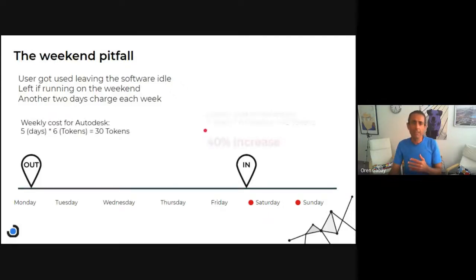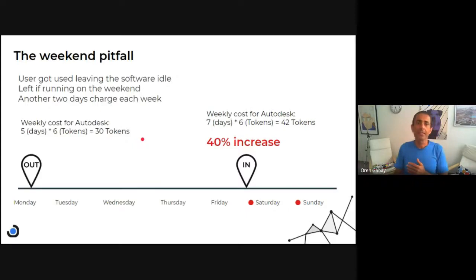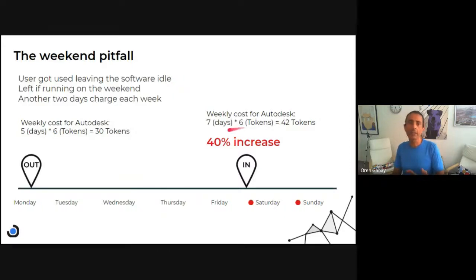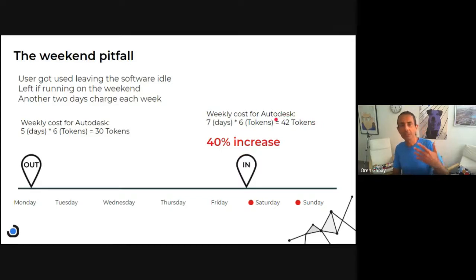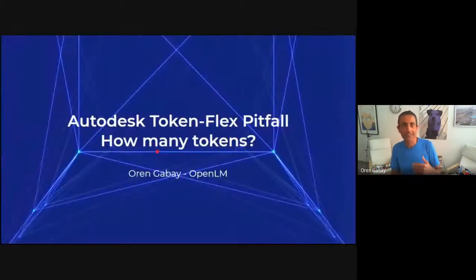This is a significant cost. Typically we would pay 30 tokens per week — five days at six tokens each time. But if we leave it over the weekend, we get another 40%, so we pay 42 tokens for each week. And this is for the cheapest product, which is Autodesk — of course there are some that are much more expensive.